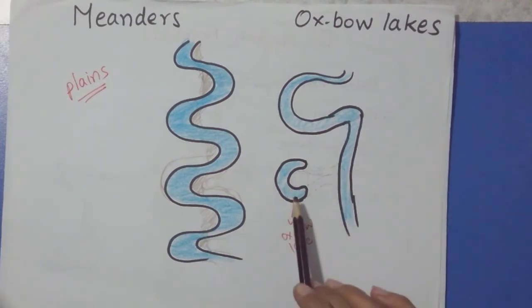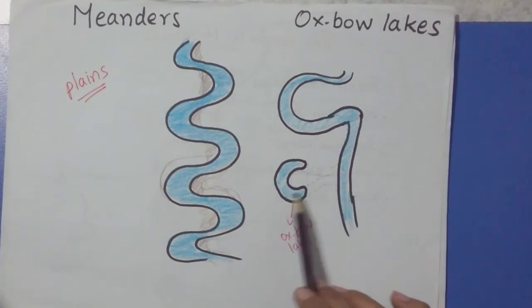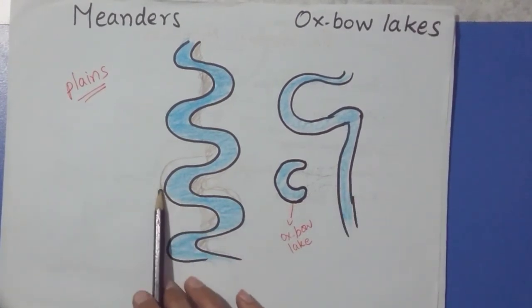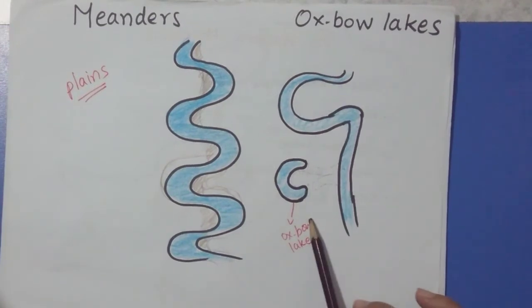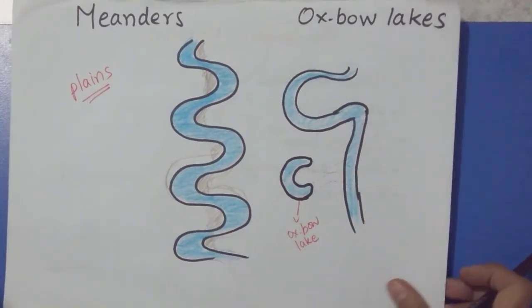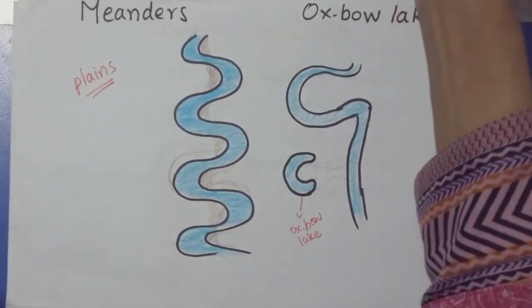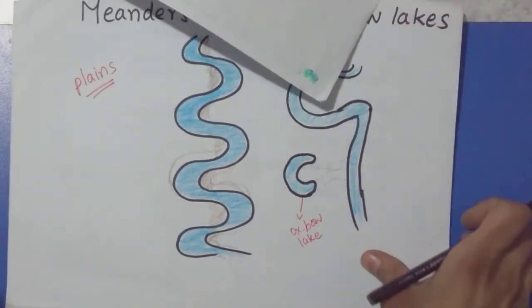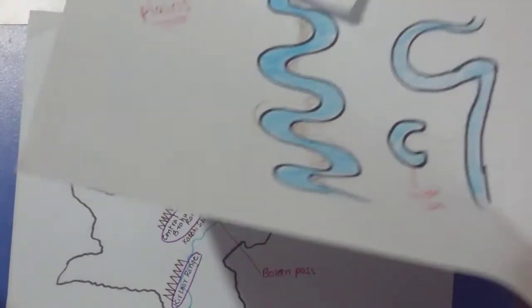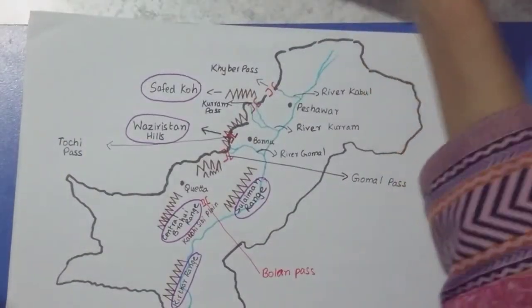So it's a lake of its own. This is the oxbow lake. It is detached from the main body of the river. So that was about meanders and oxbow lakes. I hope it's clear. Now the next thing we will be discussing is levees.